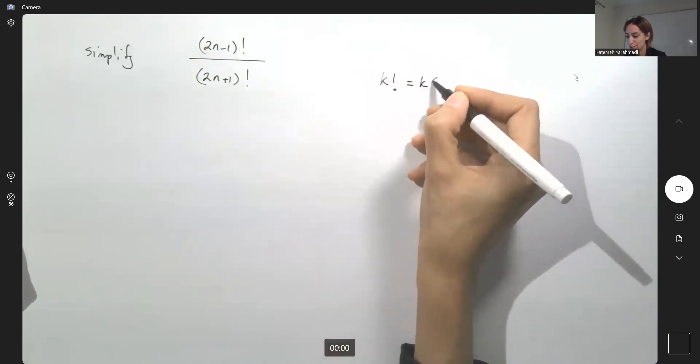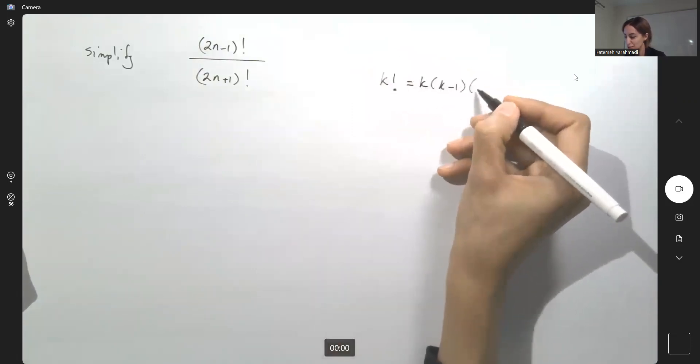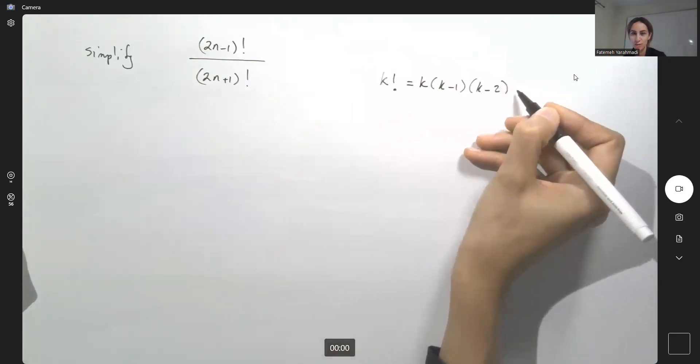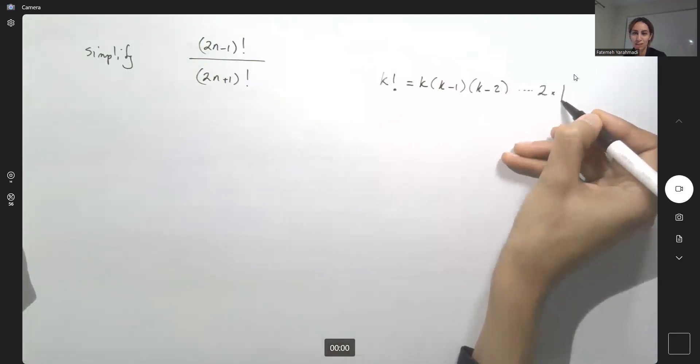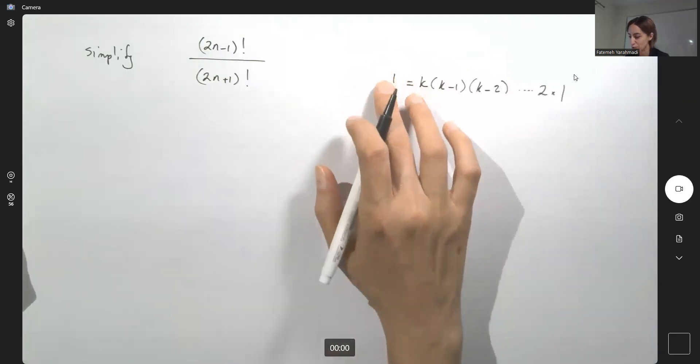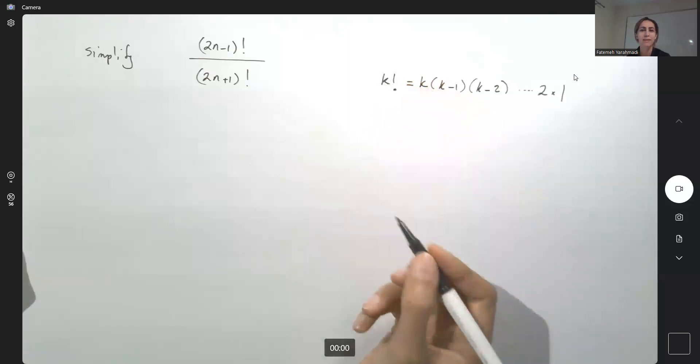k factorial is k times k minus 1 times k minus 2 times k minus 3, k minus 4, k minus 5, and then multiply by 2 and 1. This is the basic definition of k factorial or n factorial, anything that you want.